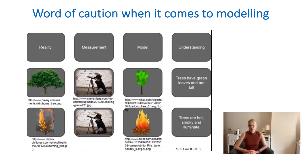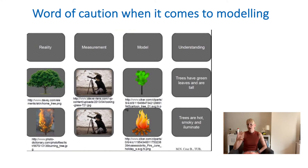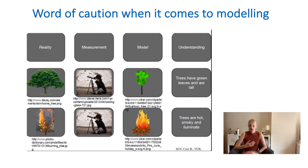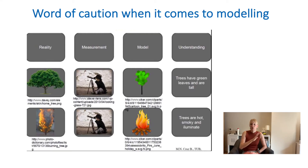Models are always a representation of reality, not reality itself. Consider this example of a tree: we recognize a tree every single time, but when you work with neural networks you have to train them on specific aspects. You might train a model saying a tree has green leaves — but then in winter when the tree has no leaves, the computer wouldn't recognize it, but we would. Or if the trees are on fire, the model wouldn't recognize it as a tree because the colour is very different. So the training of the model is very important.